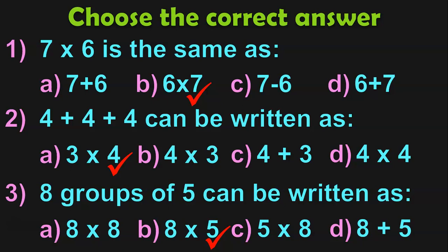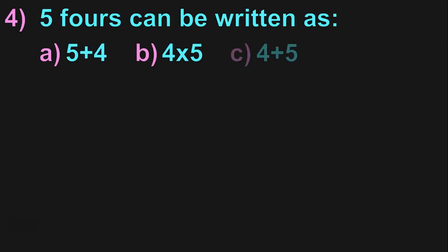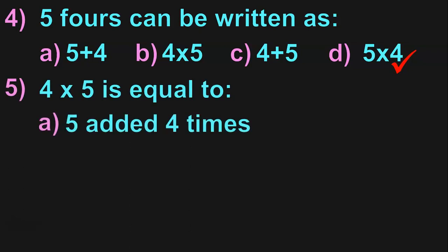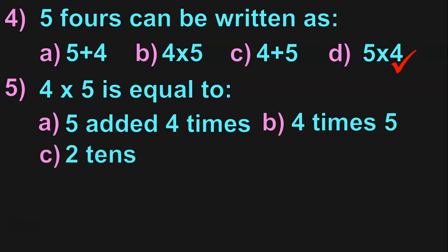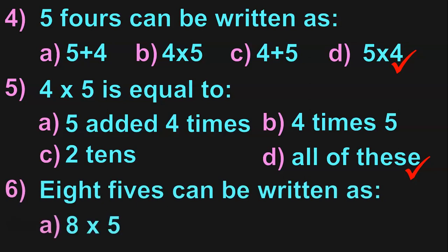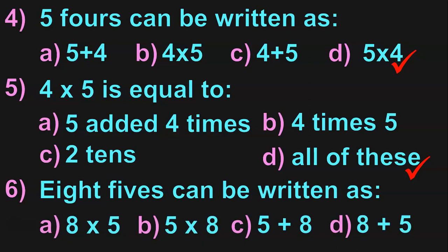If children are very familiar with the concept of multiplication, they can do all these sums very easily. 5 4s can be written as 5 into 4. 4 into 5 is equal to: 5 added 4 times, 4 times 5, 2 times, or all of these. 4 into 5 is 5 added 4 times, which is also 4 times 5, which equals 20. So all of these answers are correct — choose option D. 8 5s can be written as 8 into 5, which is the correct answer.